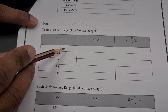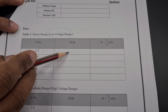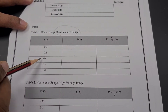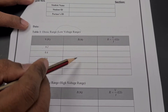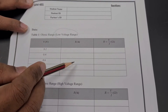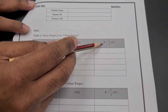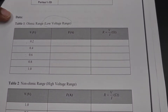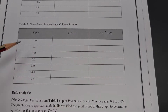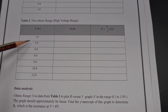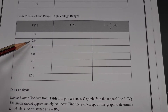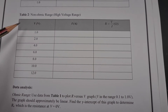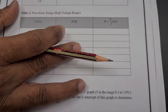If you set 0.2 volt, what should be the current? If you set 0.4 volt, what should be the current? Likewise for 0.6 and 0.8 — you have to record the current. Once you get the current information, you can easily find the resistance using R = V/I. The second table is exactly the same, but the voltage range is higher: 1, 2, 4, 6, and so on — big numbers. You are going to give a high voltage, and for that high voltage, you find the respective current.